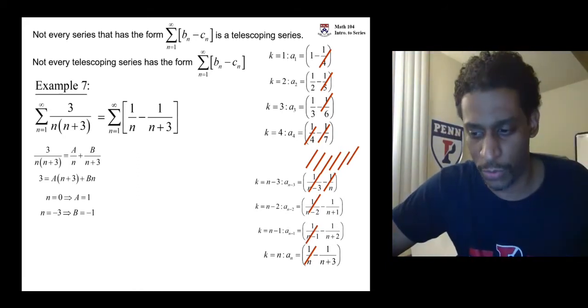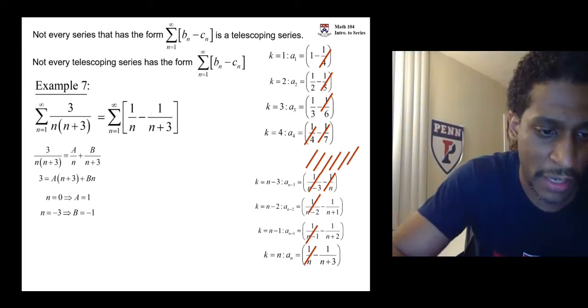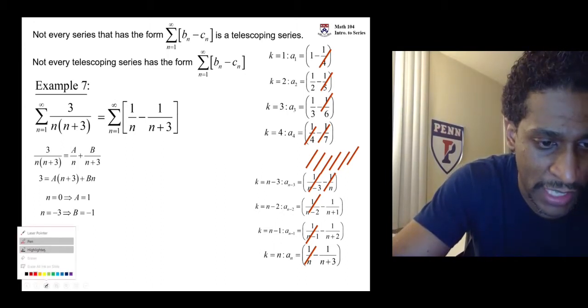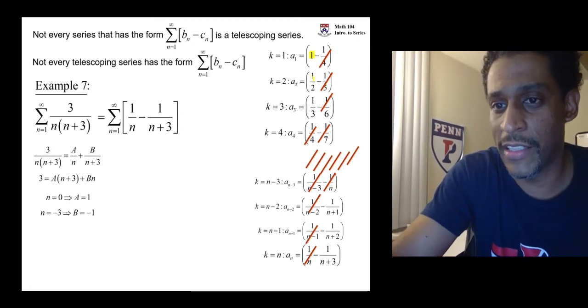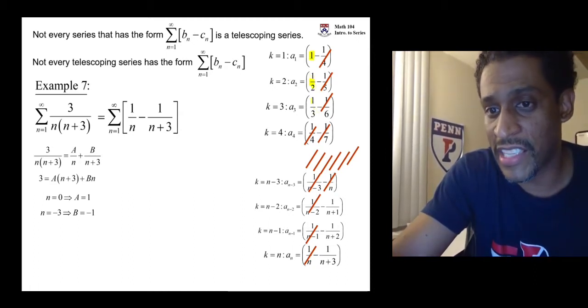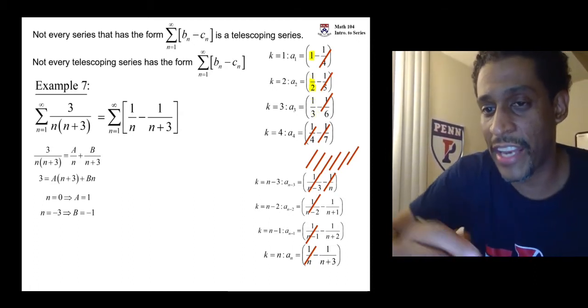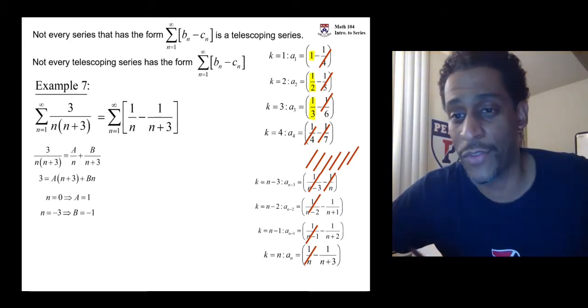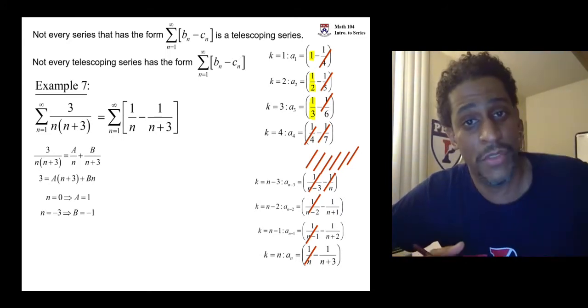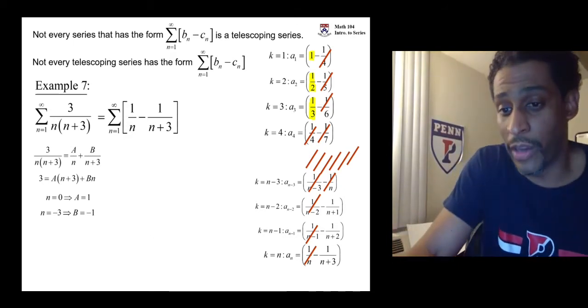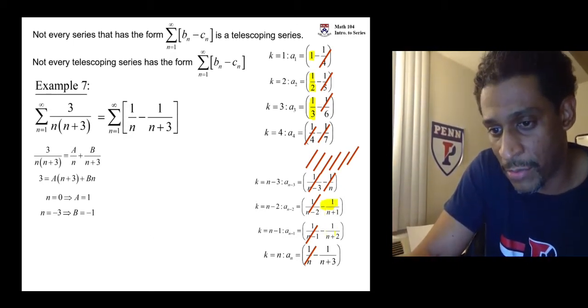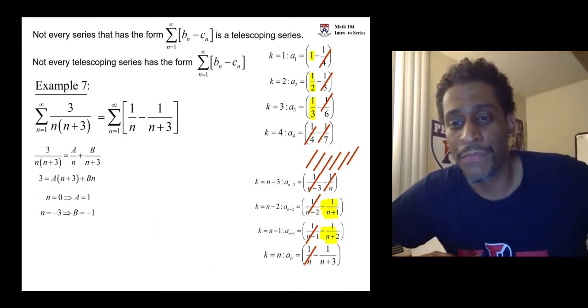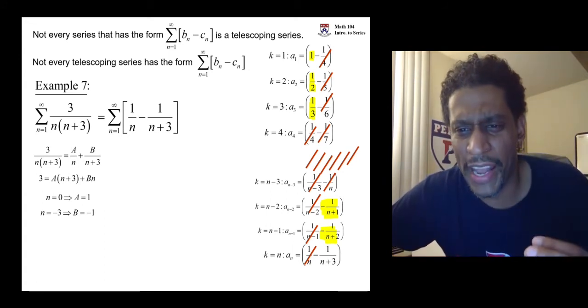One over n minus three and one over n minus two and one over n minus one, they all cancel. Remember the number of surviving terms in the beginning must match the number of surviving terms in the end. These guys here never got a chance to cancel. Three surviving terms.